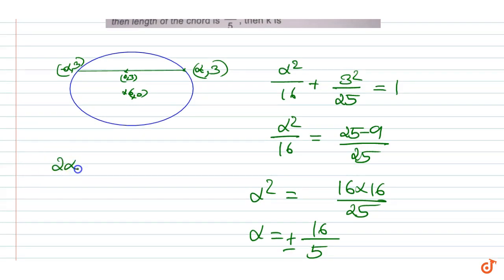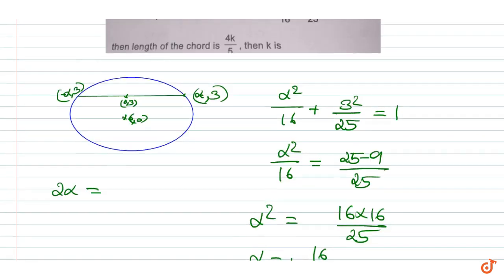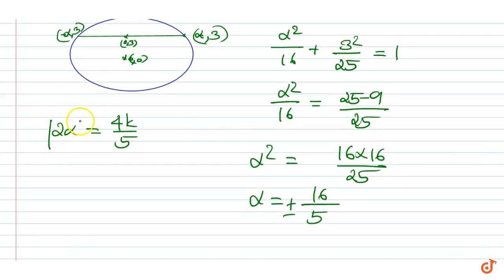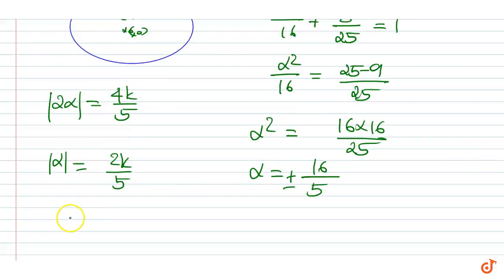Now the length of the chord is 2|alpha| equal to 4k by 5. 2 mod alpha, that is mod alpha, equal to 2k by 5. This gives k equal to 5 mod alpha by 2.